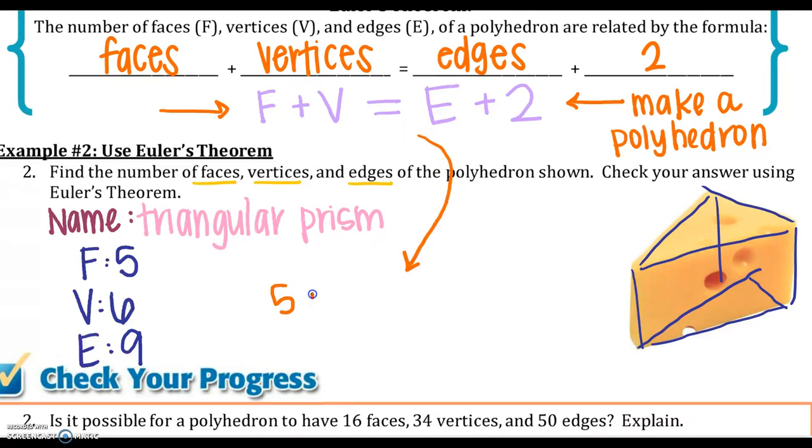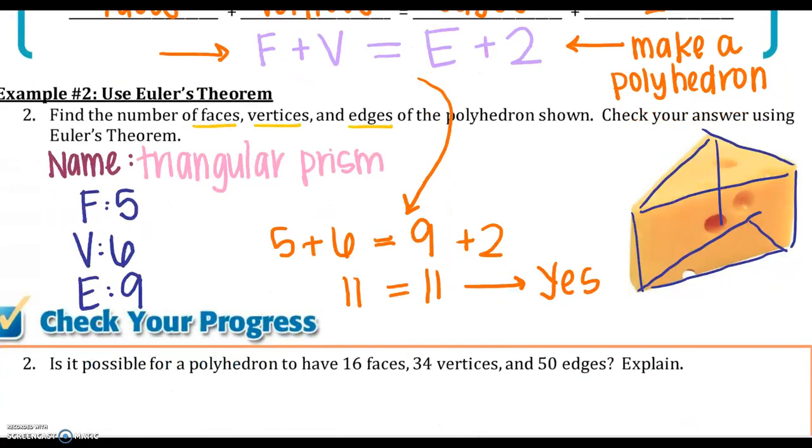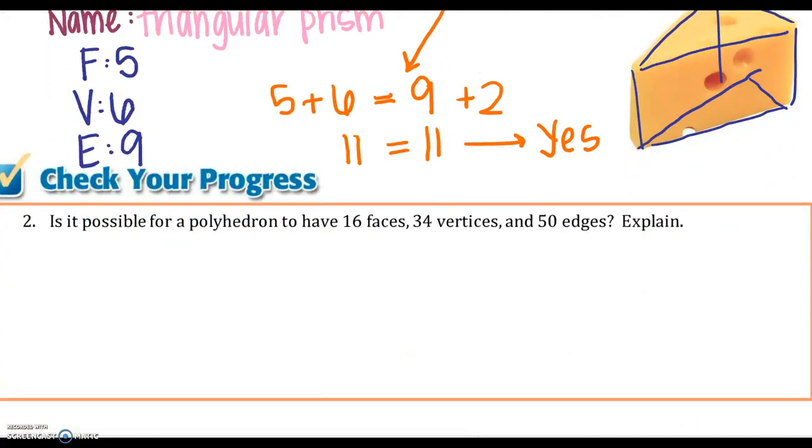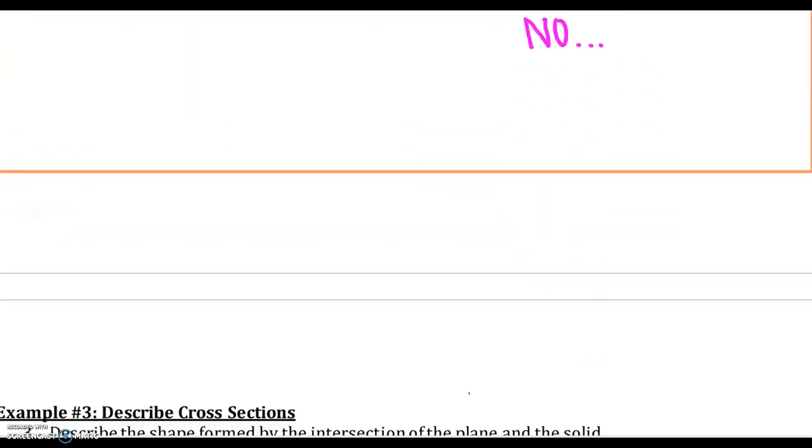So using Euler's theorem, I'm going to say faces plus vertices must equal my edges plus two. Does 11 equal 11? That would be yes. So it is a polygon because Euler's theorem is a true statement. Go ahead and check your progress of Euler's theorem right below. So your answer is no, but make sure you show your work and explain why that must be true.